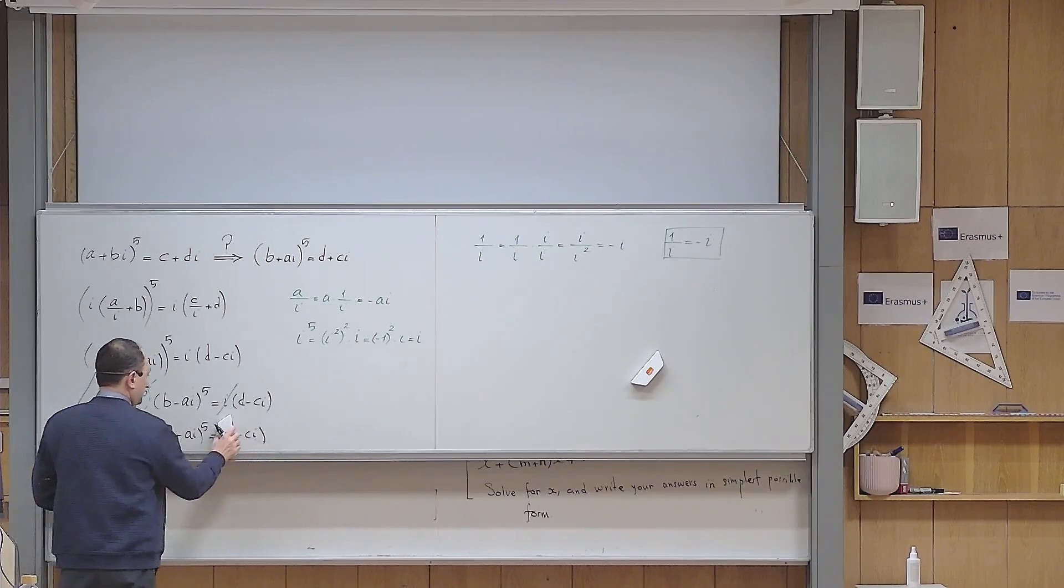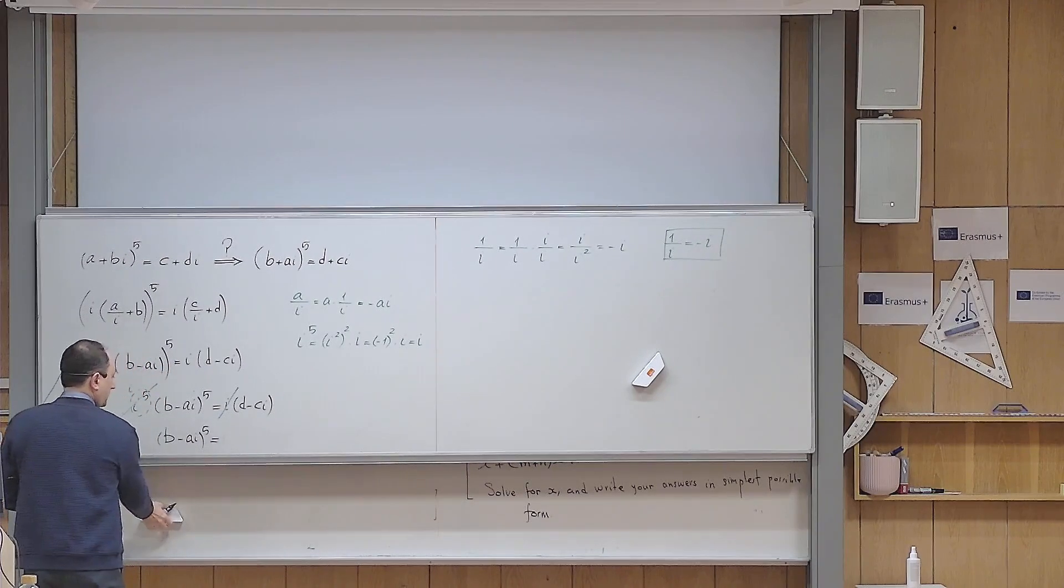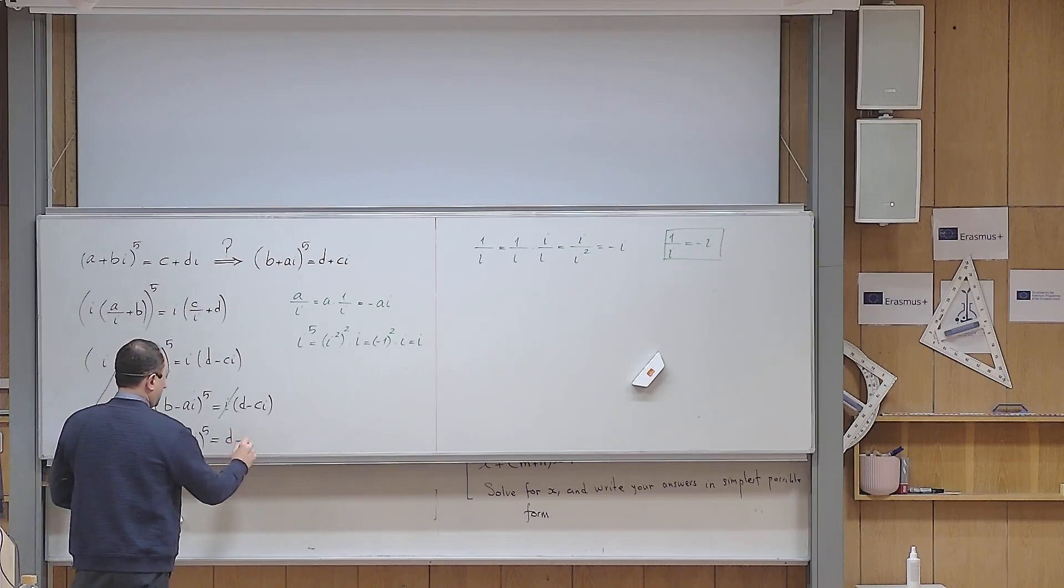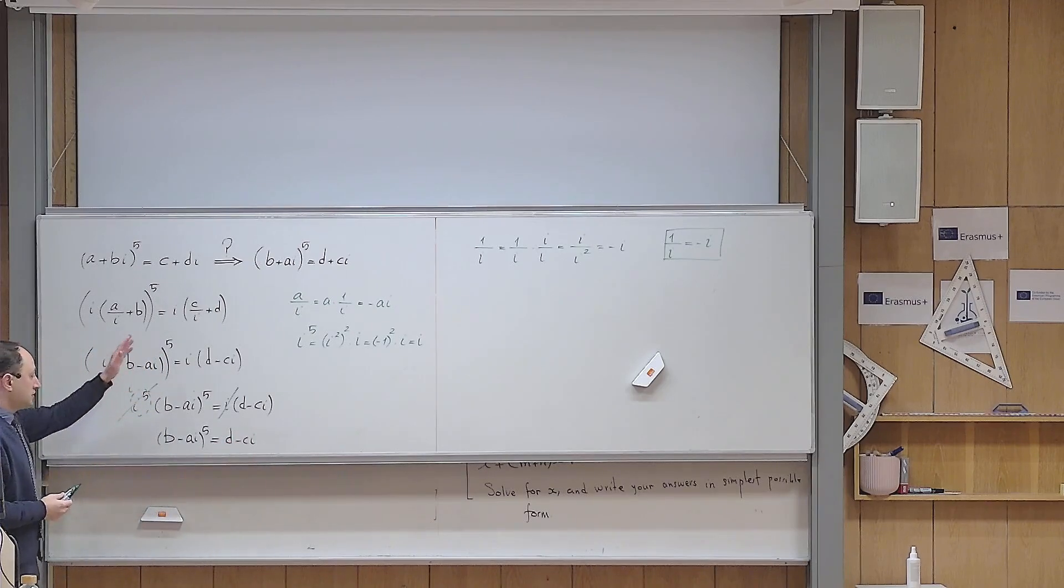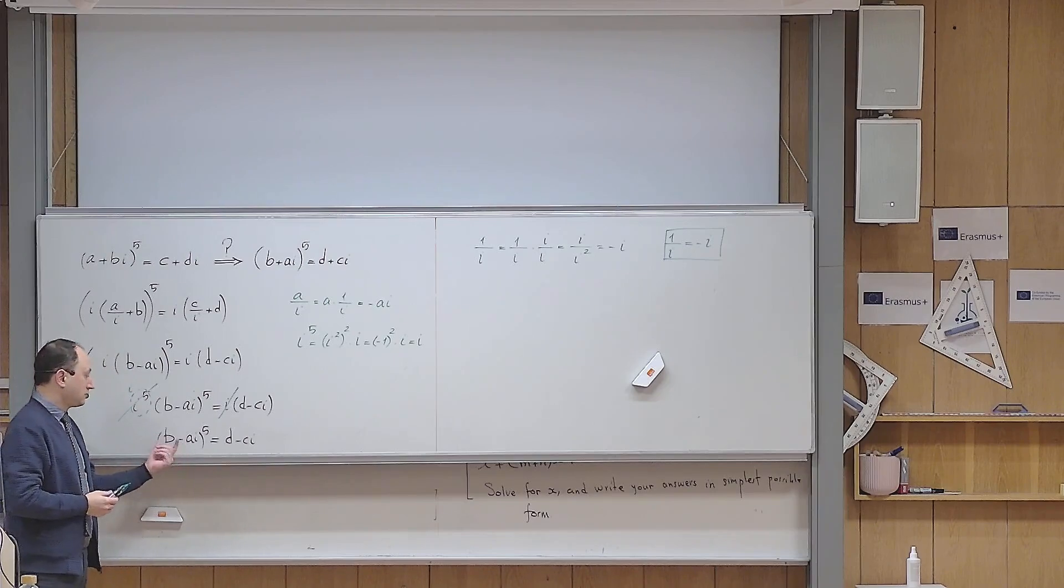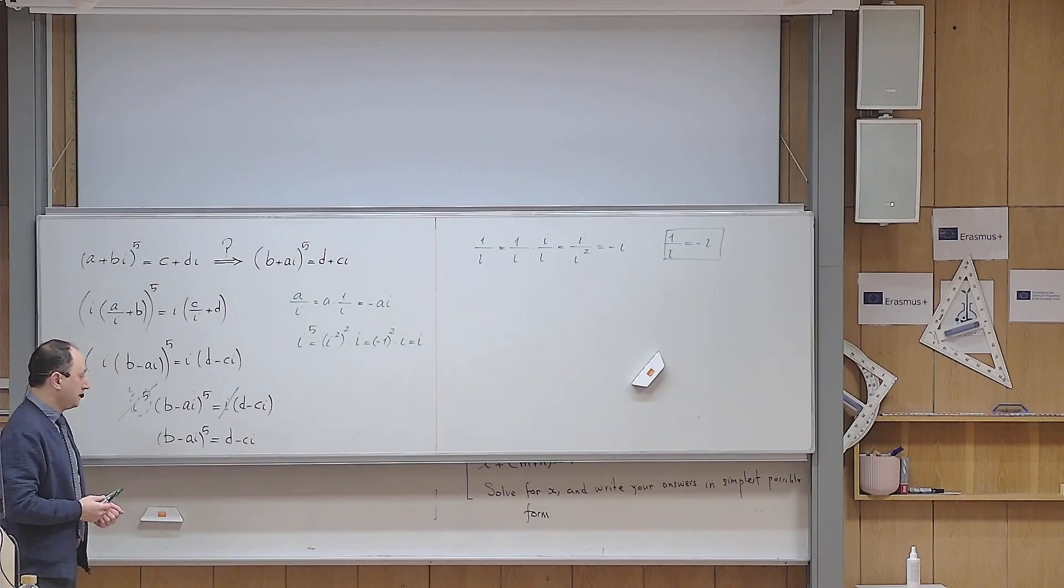Okay, and I don't need the pair of brackets, so it becomes d minus ci. So you see, at least I succeeded to interchange the role of b and a.